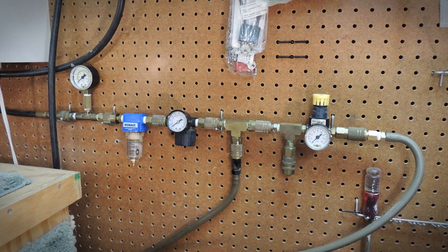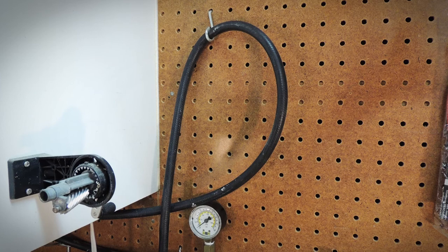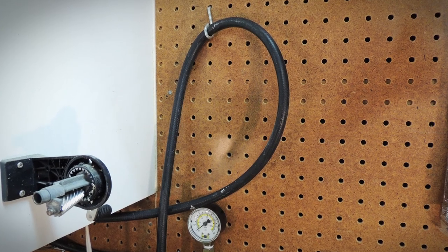While we're here, let's take a look at the setup for pneumatic tools. We loop the hose coming out of the compressor to prevent oil from going back into the tank from the pneumatic tools.